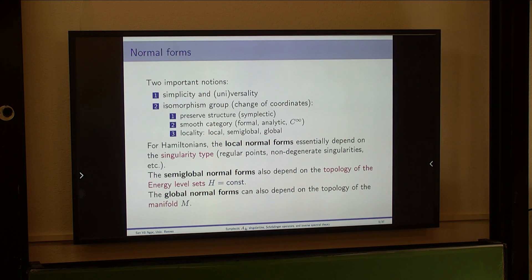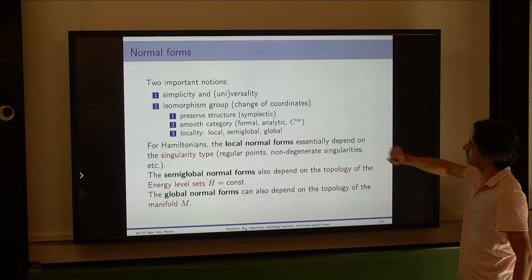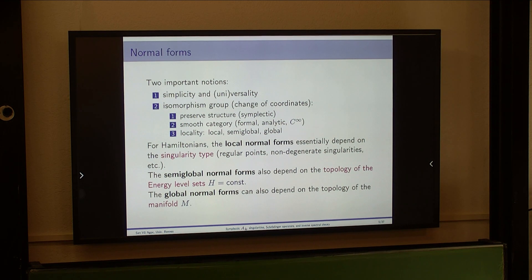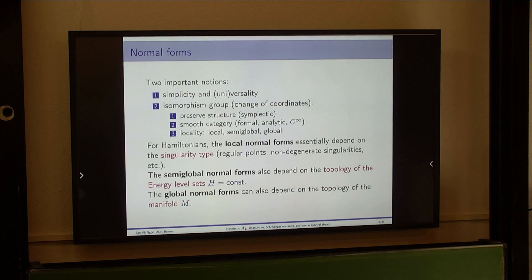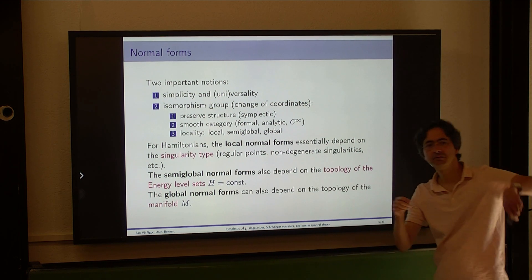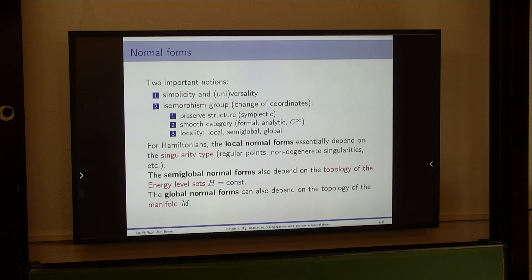For Hamiltonians, the local normal form means understanding what happens near a point in phase space, which depends on the singularity type — whether the point is regular, non-degenerate, or more degenerate. Semi-global means a normal form describing the neighborhood of the whole level set of the energy — for higher-dimensional systems, this would be the whole Lagrangian manifold. Global normal form takes into account the whole topology of the manifold.